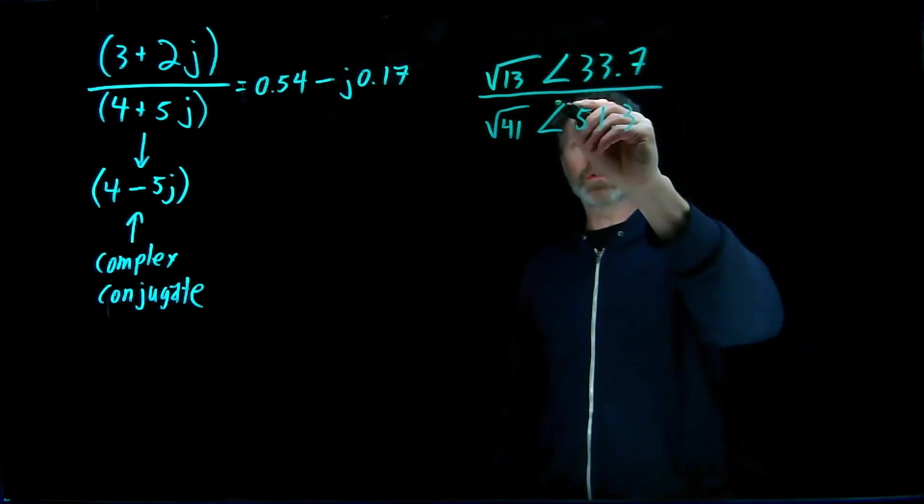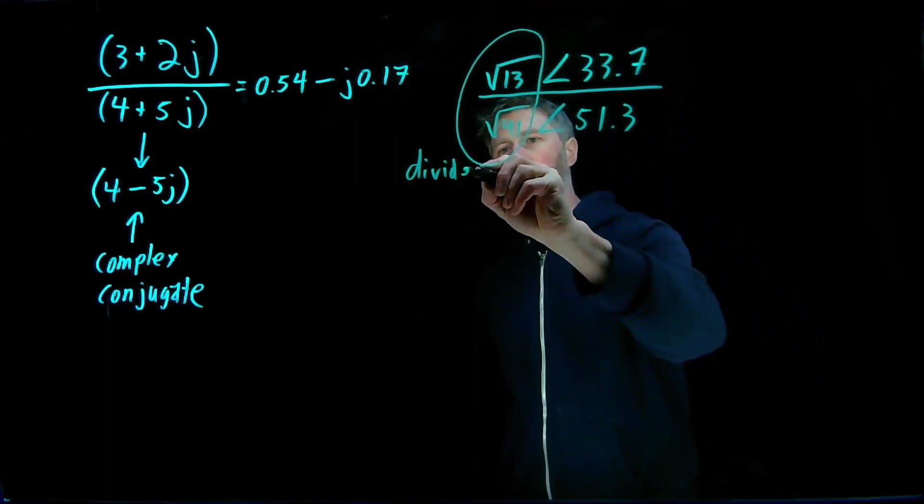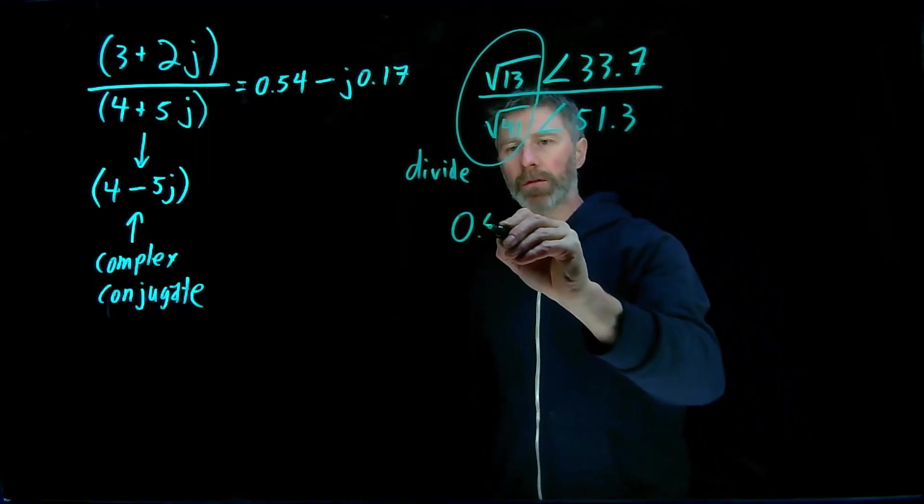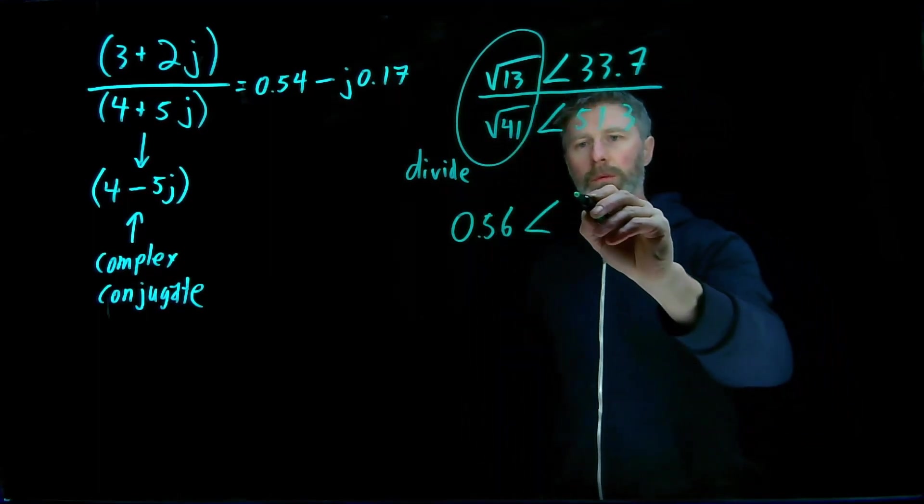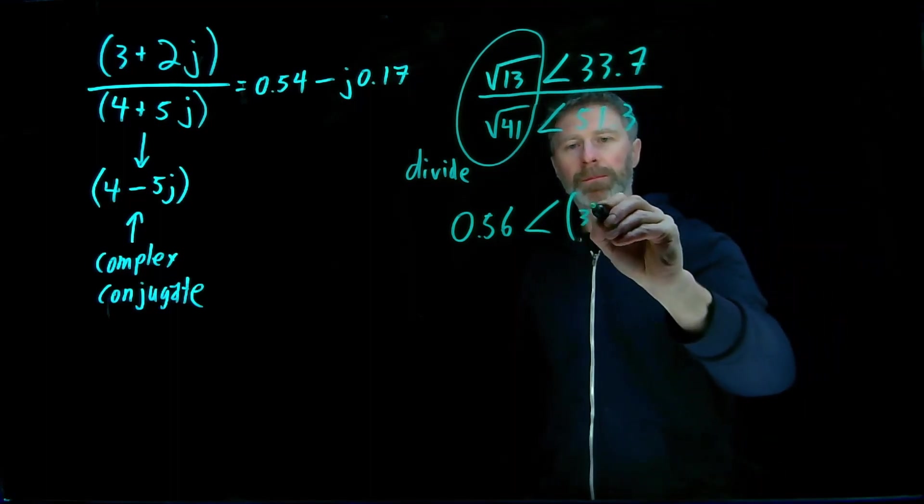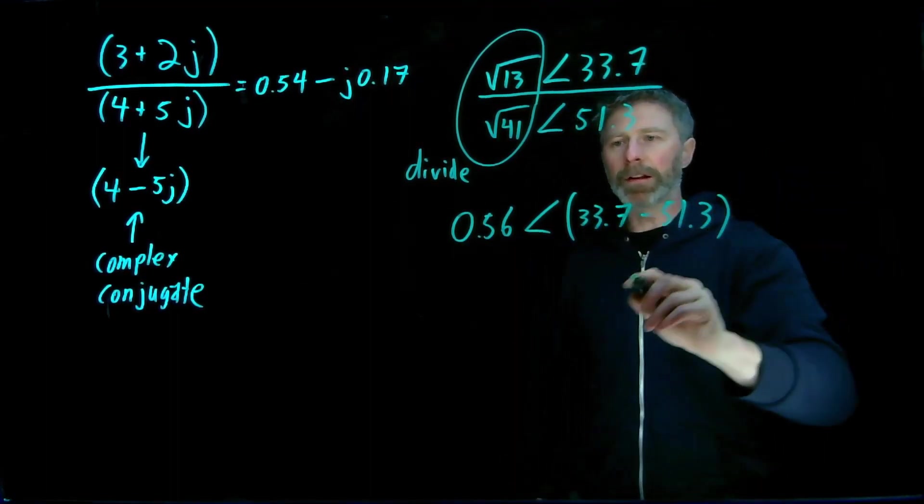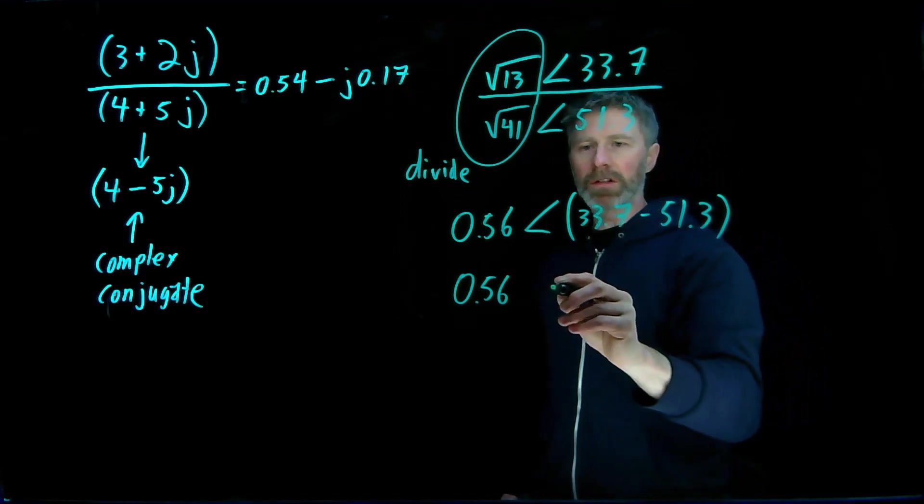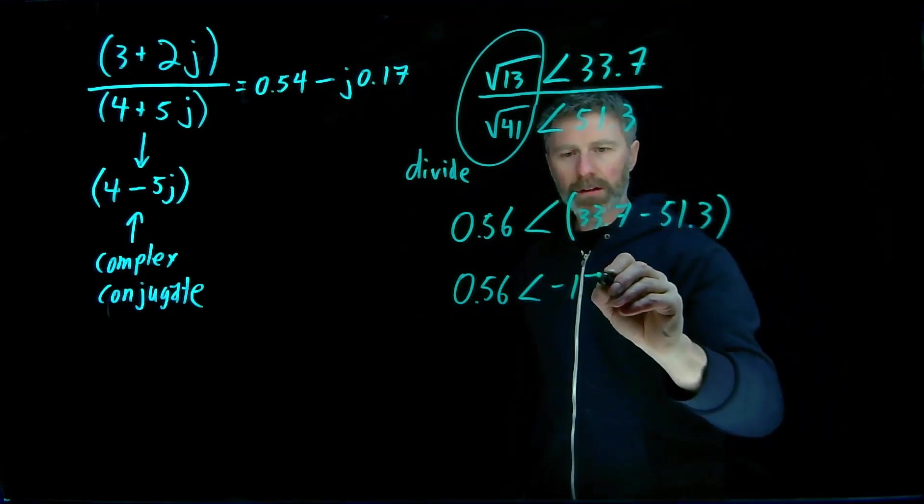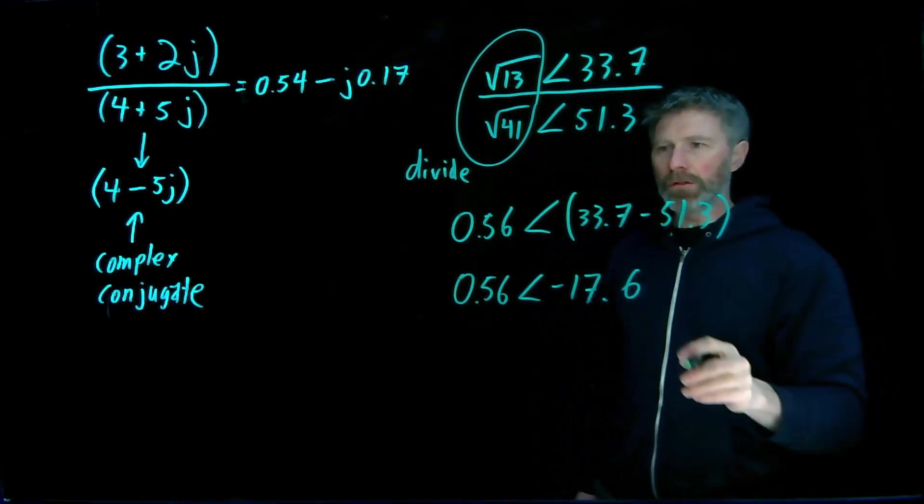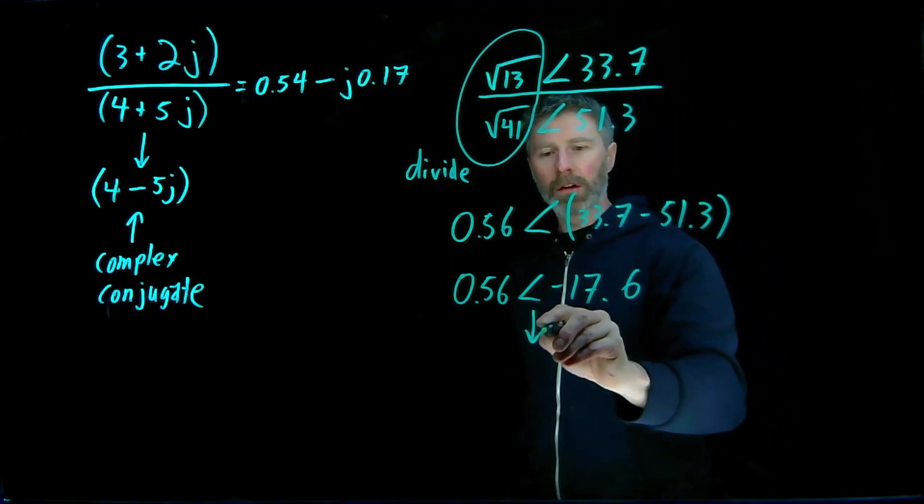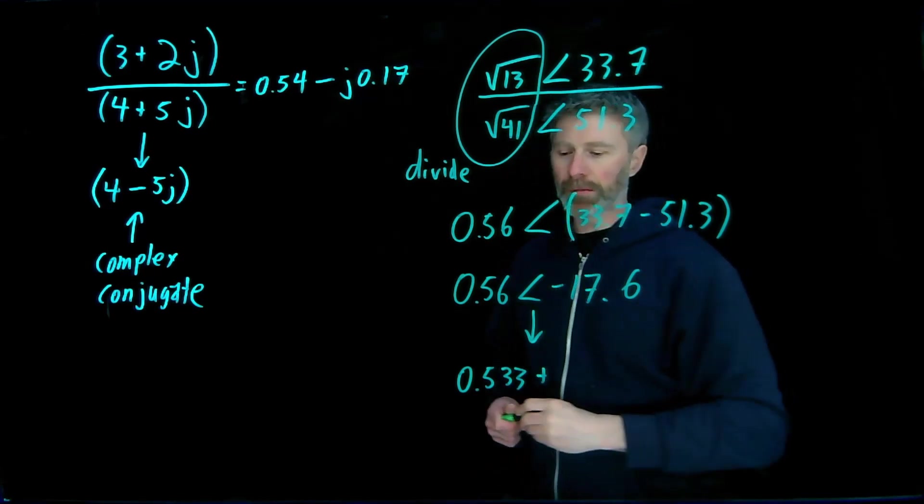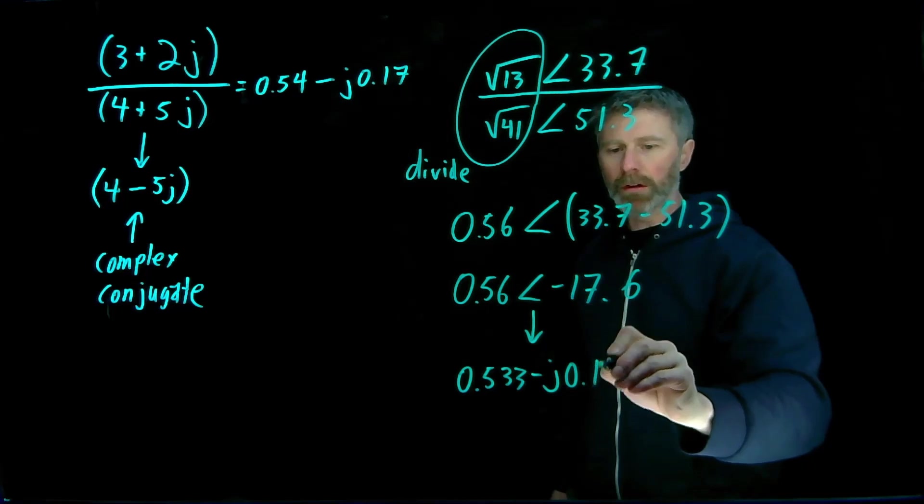So for division, what we do is we divide the magnitude portion. So root 13 over root 41 works out to 0.56. And for the phase angle, what we do is we take the phase angle on the numerator and subtract the phase angle on the denominator. So in polar notation, the division of this value by this value is 0.56 with a phase angle of negative 17.6. And if you do the conversion of this one back to the rectangular coordinates, you'll find that it is 0.533 minus j 0.17.